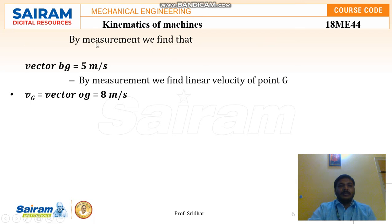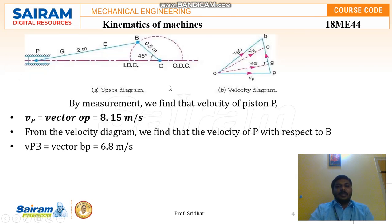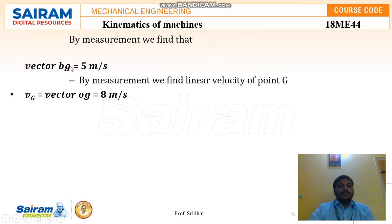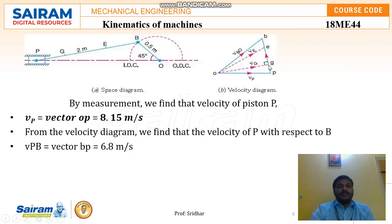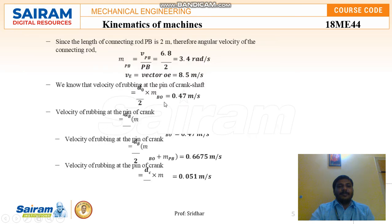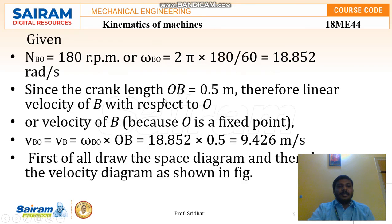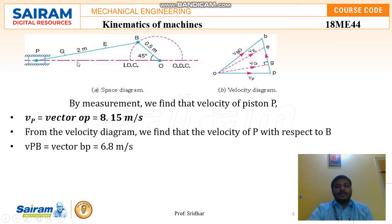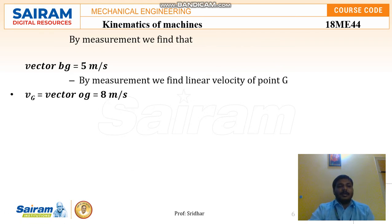Finally, measuring vector BG gives 5 meters per second, and the linear velocity of point G (O₂G) measures approximately 8 meters per second. So by drawing the space diagram and velocity diagram, substituting values, and measuring the vectors, we have found all the required values in this problem.